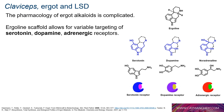Because of this ergoline core, lysergamides hit many different receptors, complicating their pharmacology. Ergo alkaloids as a whole are active at serotonin, dopamine, and adrenergic receptors. Serotonin, dopamine, and noradrenaline can each fold to fit within the ergoline core, allowing ergoline structures to mimic the effects of these neurotransmitters. Given how promiscuous these ligands are, it's not surprising that consumption of ergot has historically caused hallucinations, convulsions, and erratic behavior.